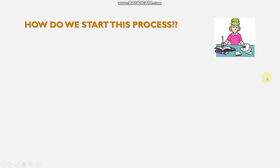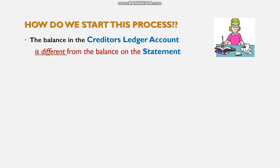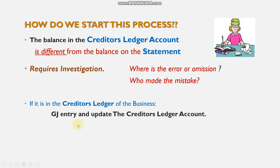How do we start the reconciliation process? The starting point is: the balance in the creditors ledger account is different from the statement balance. If they were the same, there'd be no reconciliation needed. Since they differ, we investigate — comparing the debit and credit columns carefully to identify errors and omissions. Crucially, we determine who made the mistake: which record is correct and which is incorrect.